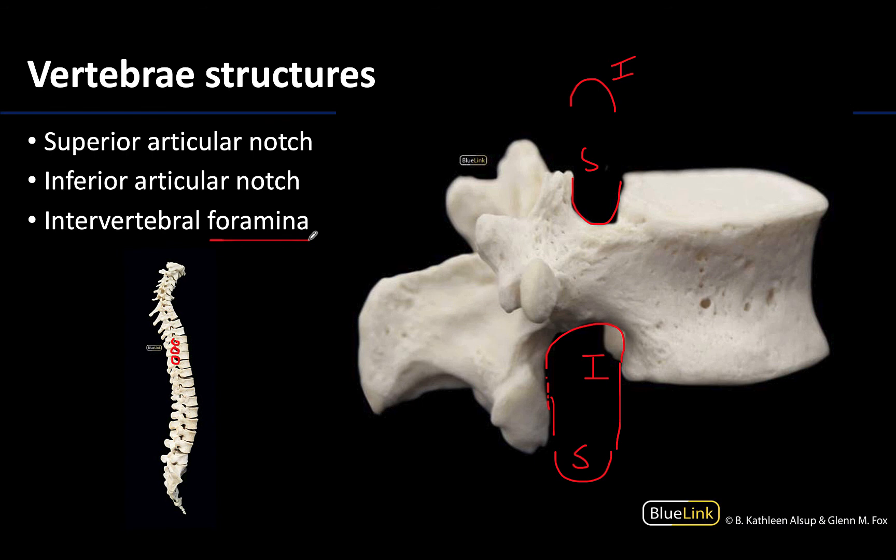Those are the basic structures that you will see in almost all moveable vertebrae. We will move on in terms of stations, talking a little bit about curvatures as well as how to tell the difference between those vertebrae. Please make sure to reach out if you have any questions, and thank you for your time and attention.